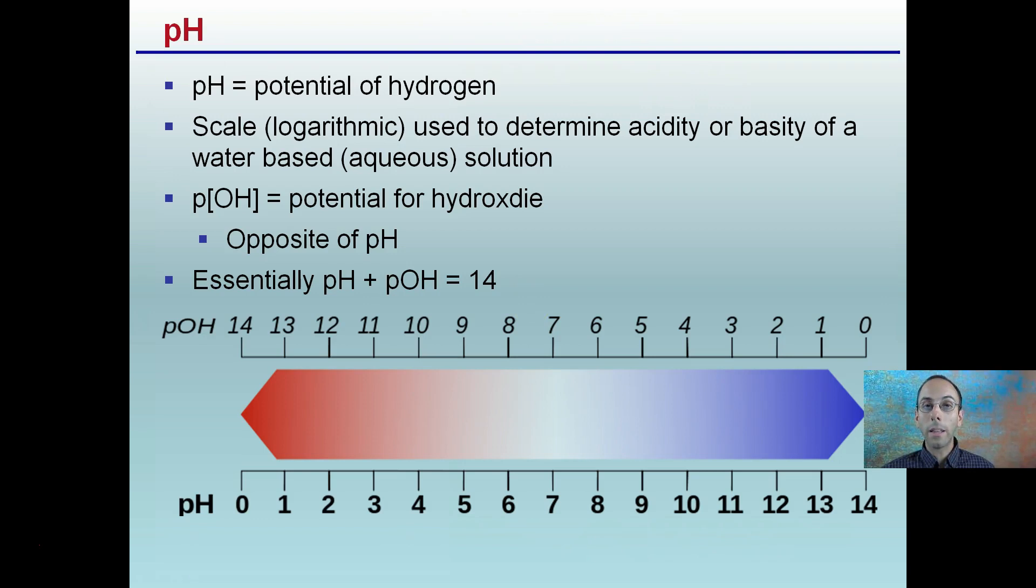However, anywhere else is where it starts to differ. Something we may consider an acid, for example pH of 2, right around stomach acid, very acidic, very strong acid. That same substance is going to have a pOH of 12, because 2 plus 12 equals 14. Same thing if we look at a basic solution, pH of 10 will have a pOH of 4, because 10 plus 4 equals 14.